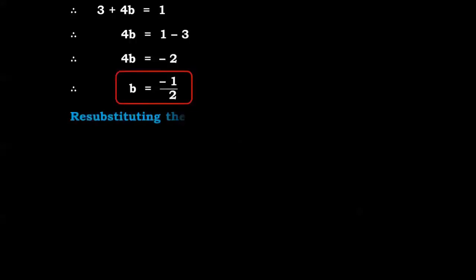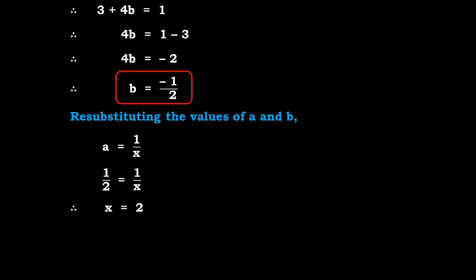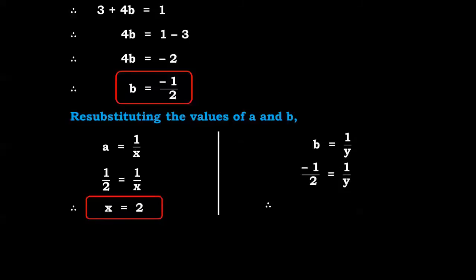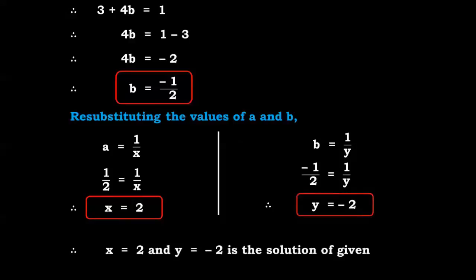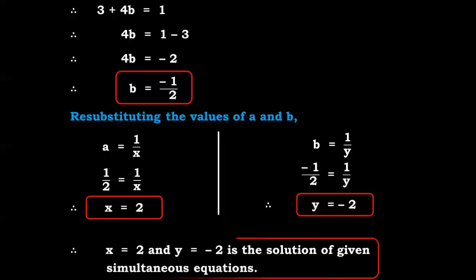Now resubstituting the values of a and b: a equals 1 upon x, so 1 upon 2 equals 1 upon x, therefore x equals 2. And b equals 1 upon y, so minus 1 upon 2 equals 1 upon y, therefore y equals minus 2. So the answer x equals 2 and y equals minus 2 is the solution of the given simultaneous equations.